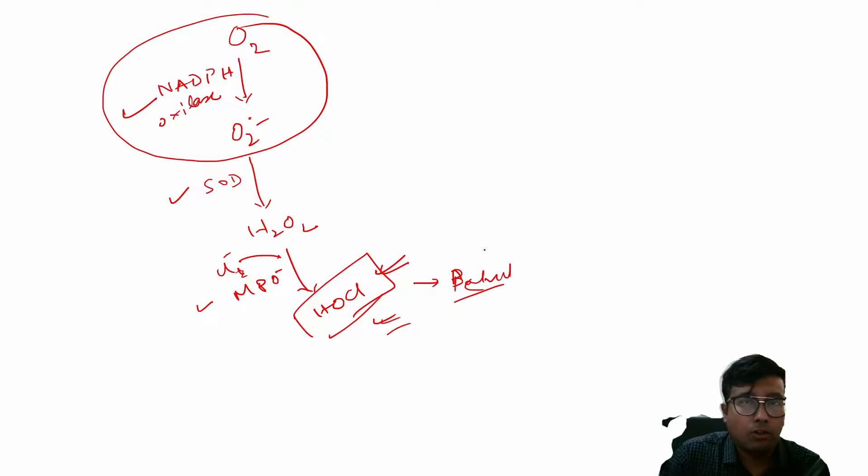In chronic granulomatous disease, as you might be knowing, this NADPH oxidase enzyme is deficient. Therefore, in normal circumstances we need NADPH oxidase, we need superoxide dismutase, we need MPO for activity.